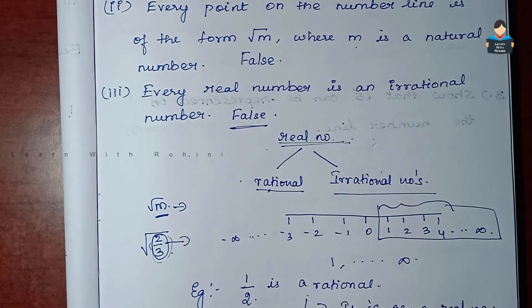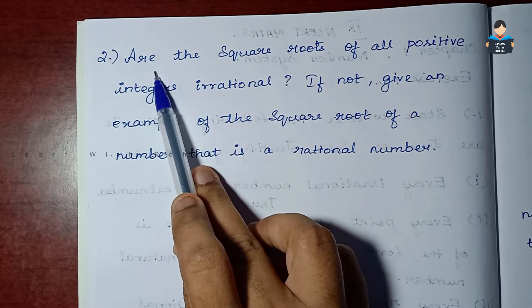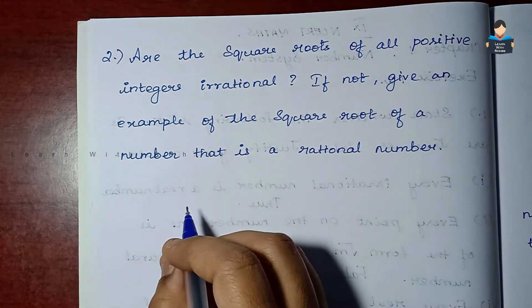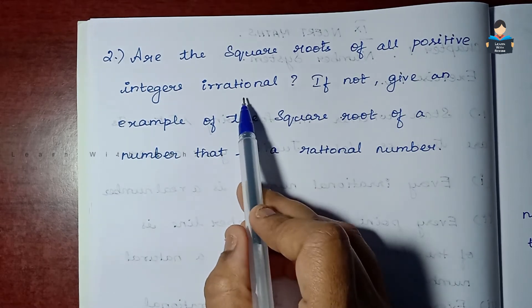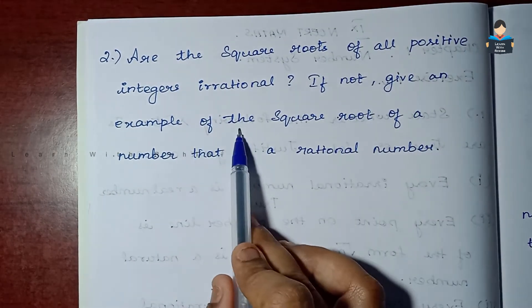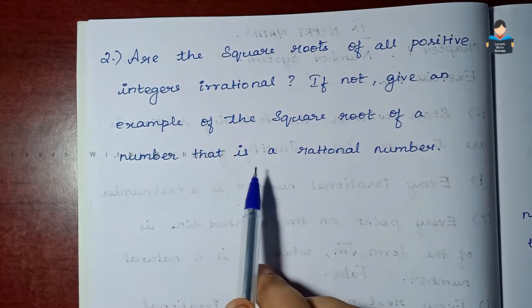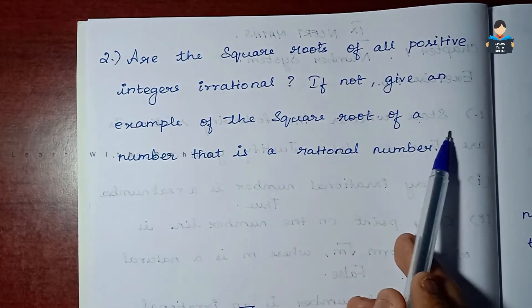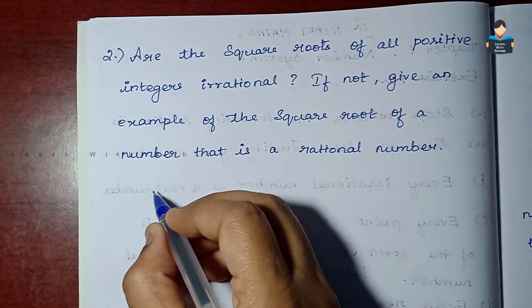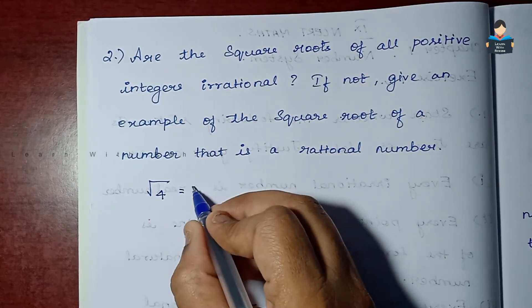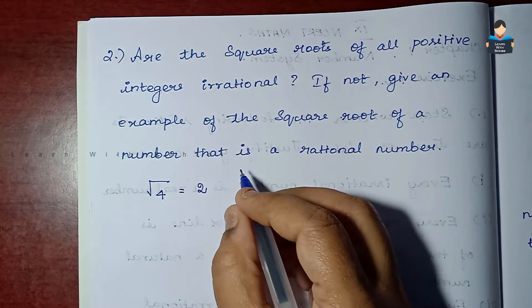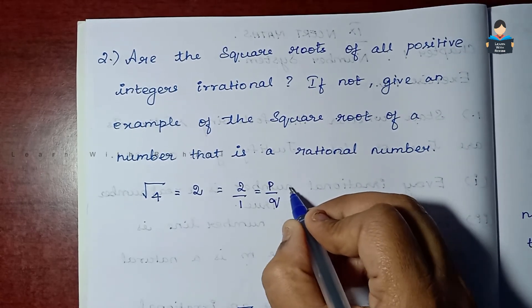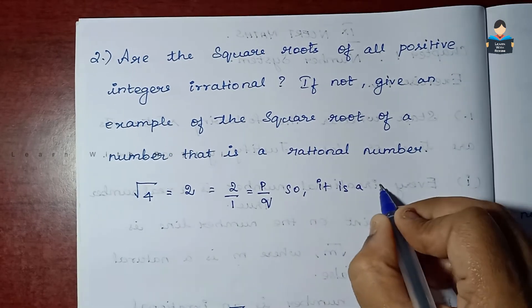Now for the second question: are the square roots of all positive integers irrational? If not, give an example of the square root of a number that is rational. We look at √4. The value of √4 is 2, which can be written as 2/1. This is of the form P/Q, so it is a rational number. Therefore, the square roots of all positive integers are not irrational.